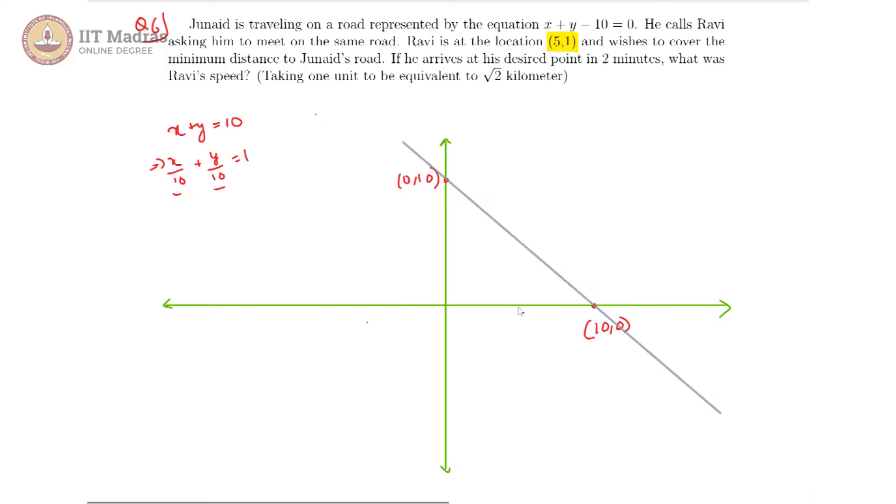That would be 5, it would be somewhere here halfway, and 1 would be somewhere here. This is 1 and this would become our location of Ravi, that is 5 comma 1.